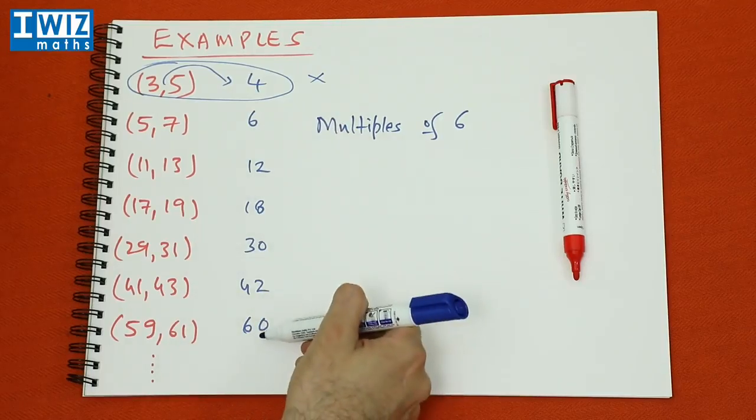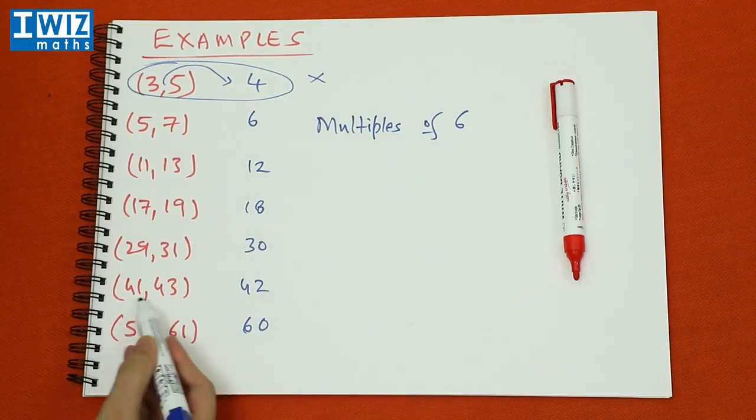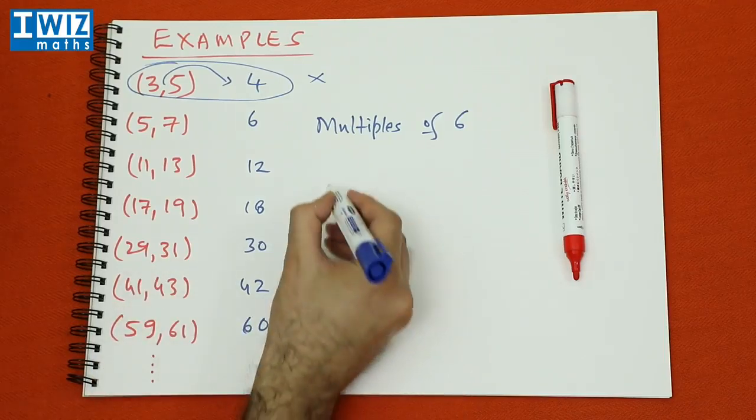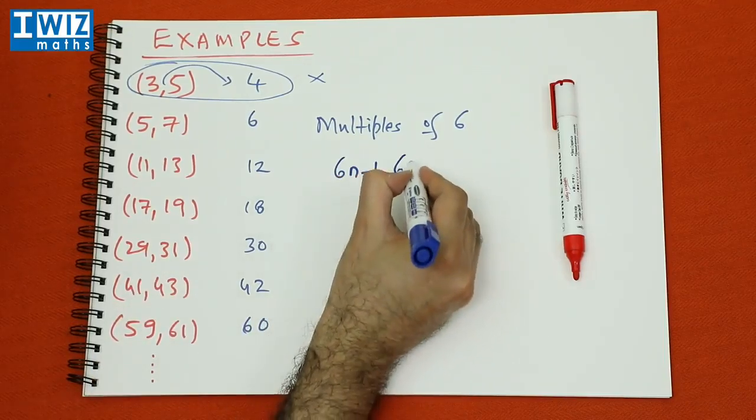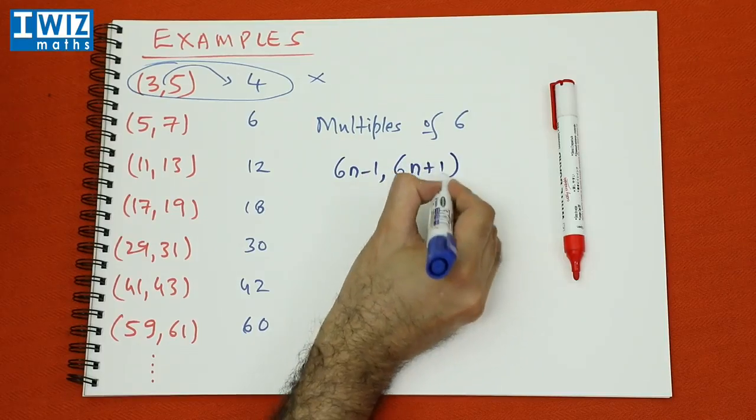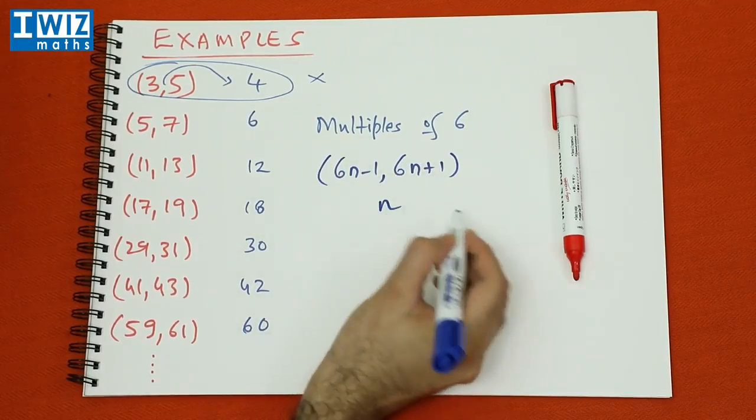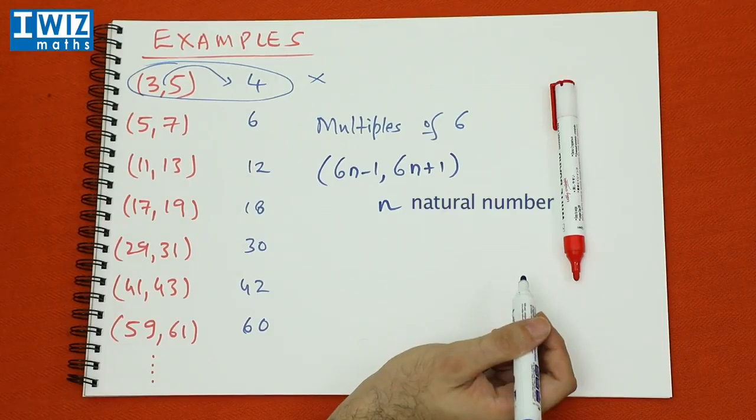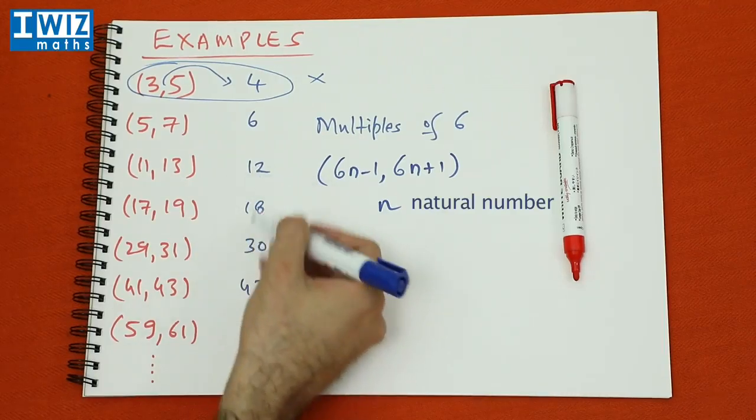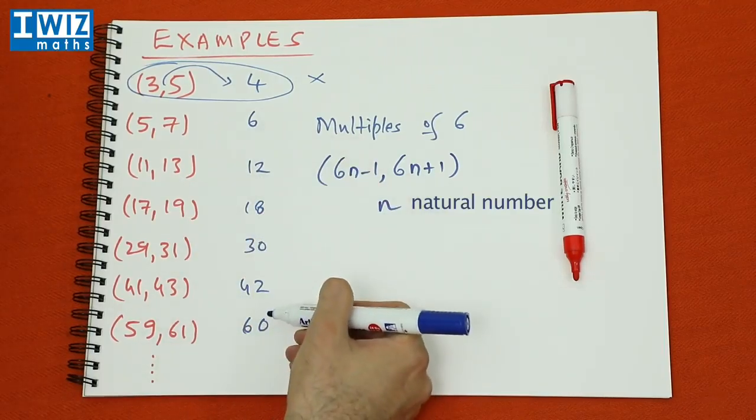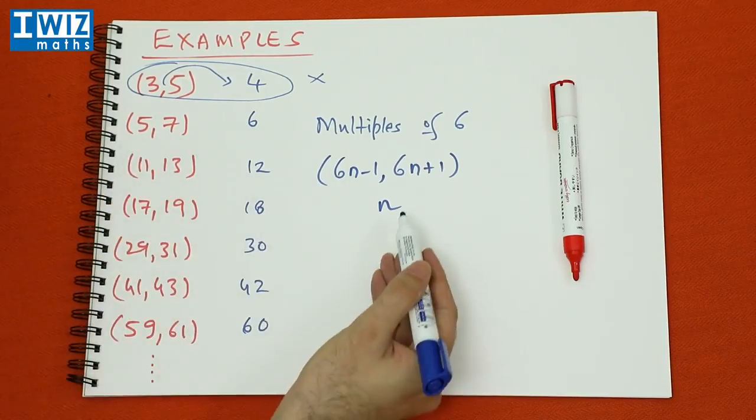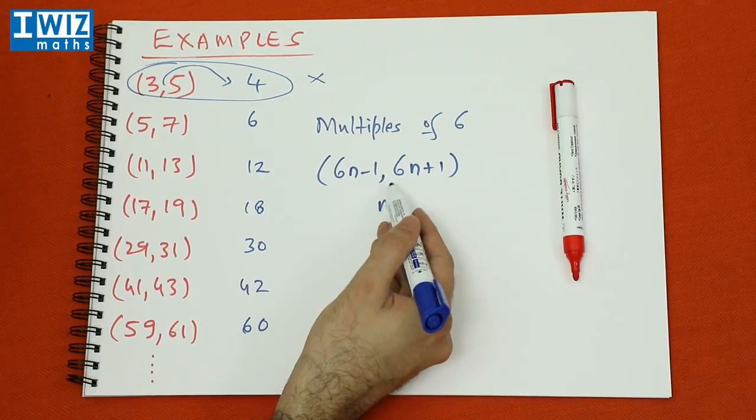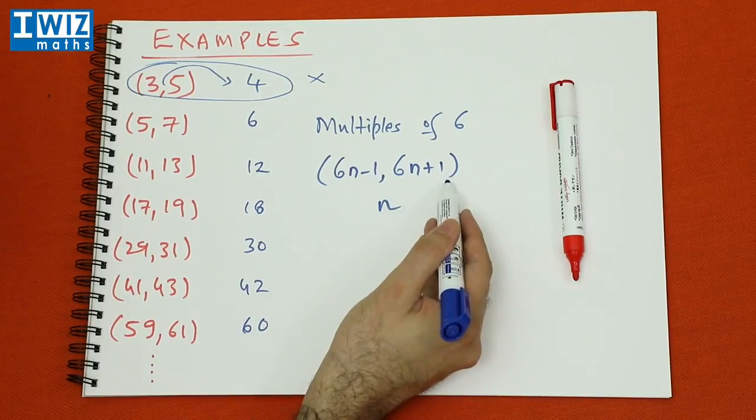So if these numbers here are multiples of 6, the structure of the twin primes is 6n minus 1, 6n plus 1, where n is a natural number. That's sort of easy to see. So if the middle number is a multiple of 6, then the structure of the twin primes is 6n minus 1, 6n plus 1.